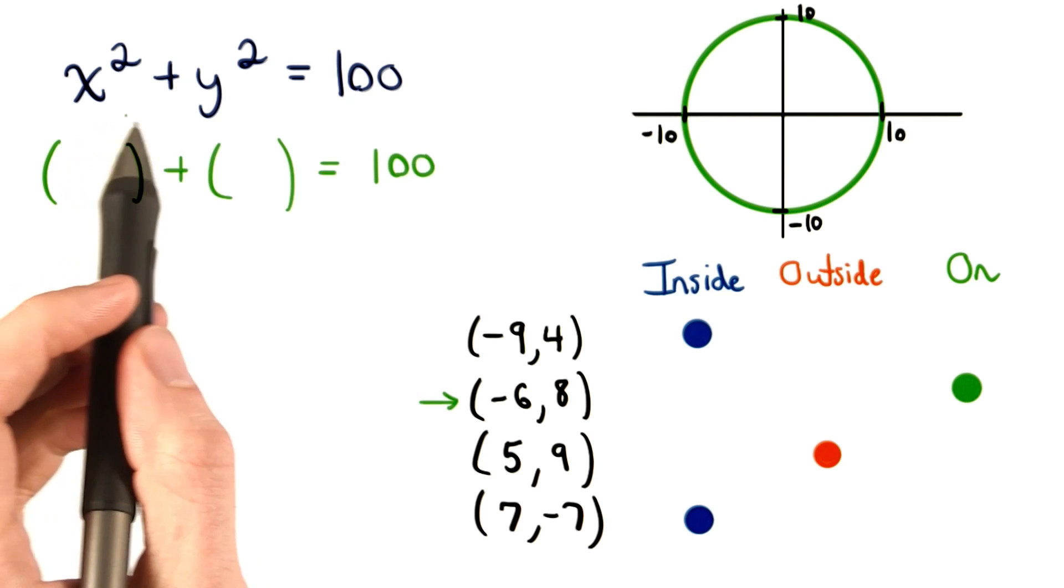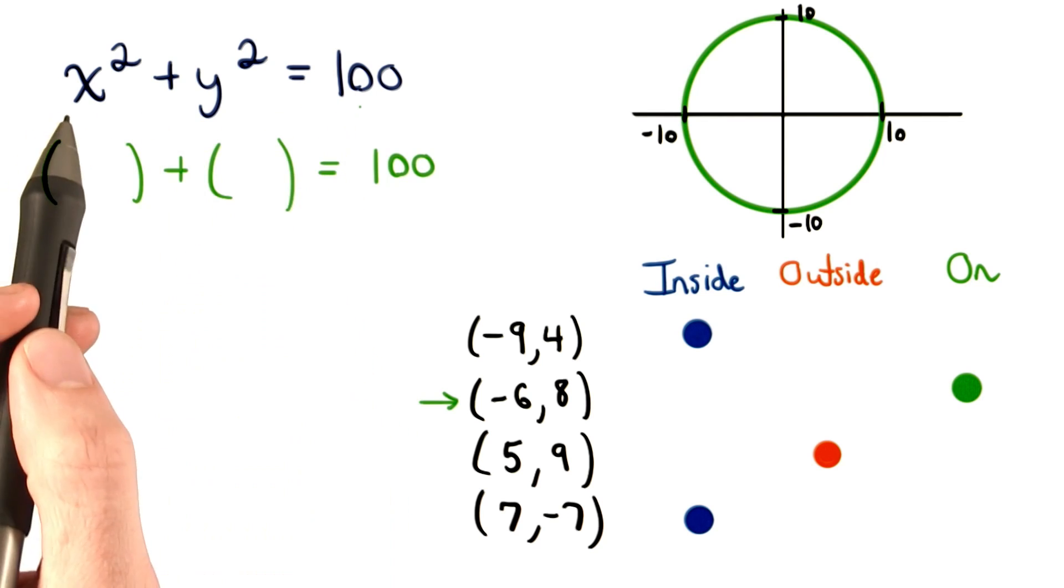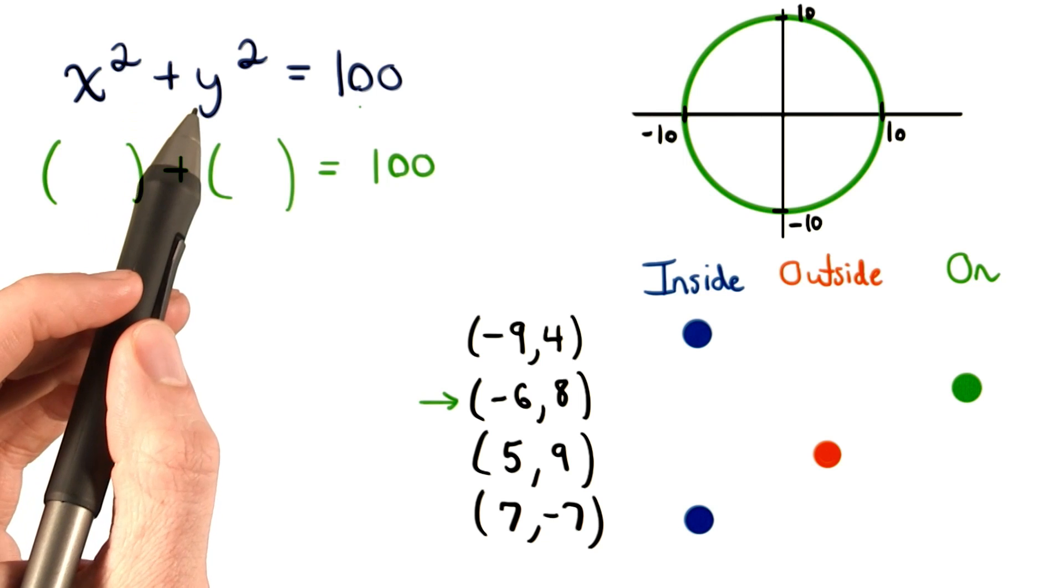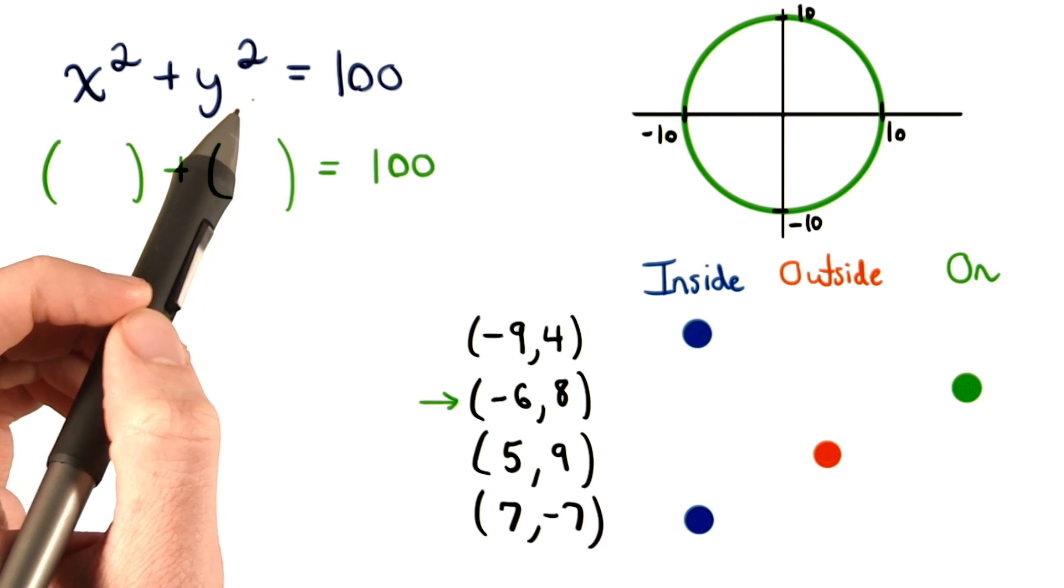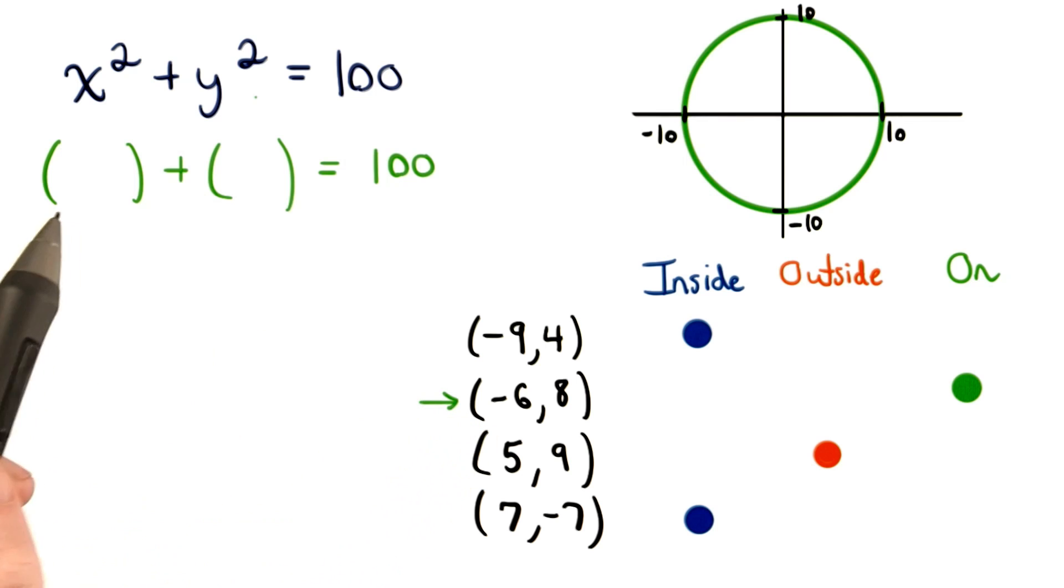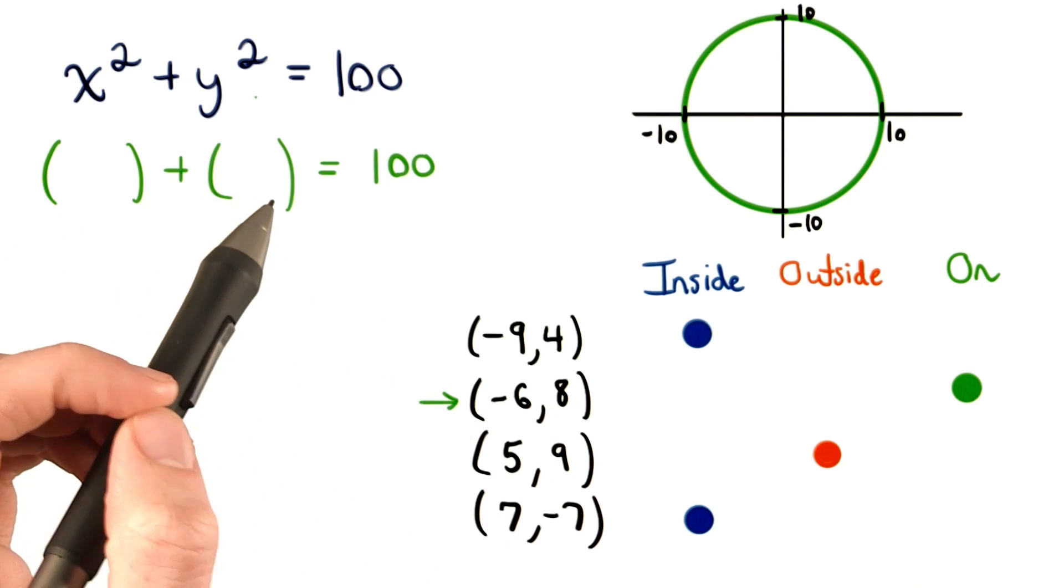Remember that this is really just a right triangle in space. It has some horizontal distance x and some vertical distance y. So, we want to be sure that when we plug in the values for x, like negative 6, and the value of y, like positive 8, we get 100.